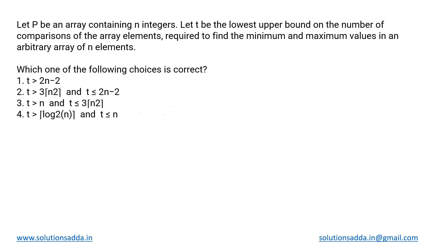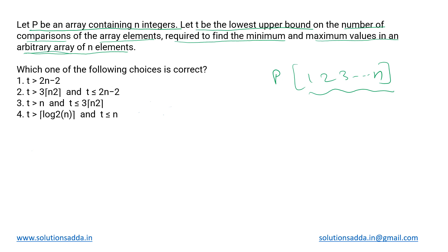We have been given an array P containing n integers. Let t be the lowest upper bound on the number of comparisons of array elements required to find the minimum and maximum values in an arbitrary array of n elements. So by 'arbitrary array' they mean the same array P. We want to minimize the value of t.